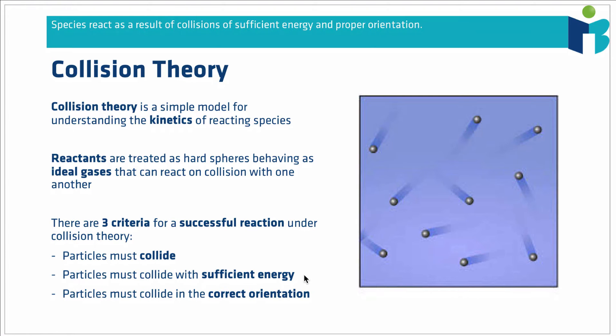Secondly, they have to collide with sufficient energy. We'll formalise that on the next slide, but they just have to collide with enough energy. And then thirdly, they have to collide in the correct orientation — essentially the right parts of the sphere have to be touching when they collide. This will be fleshed out more in later topics. But for now: particles have to collide, they have to collide with sufficient energy, and they have to collide in the correct orientation or geometry.